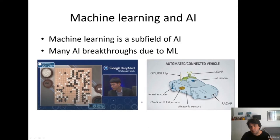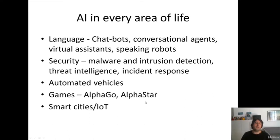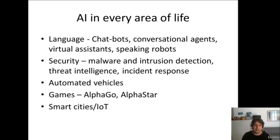A lot of things we do today by people will in the relatively near future be automated and done by artificial intelligence. AI now goes into almost every aspect of life. There are applications in language understanding such as chatbots, conversational agents, virtual assistants, and speaking robots — you can already see these with mobile phones. A lot of websites use chatbots, so quite often you would be talking to a chatbot rather than a human.